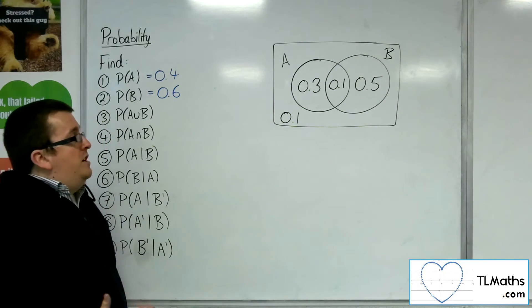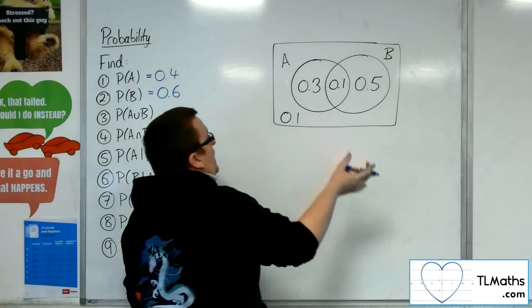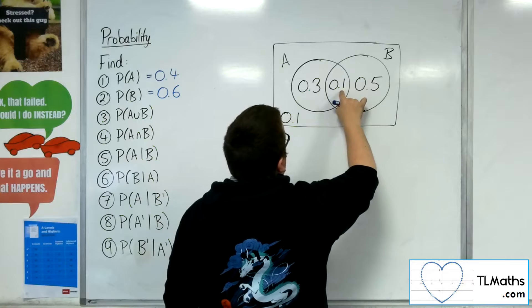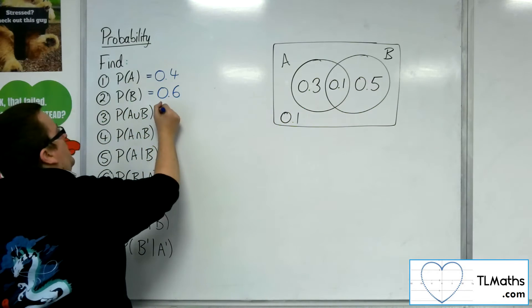The probability of A union B is A or B or both, so anything that appears within the two circles. 0.3 plus 0.1 plus 0.5 is 0.9.